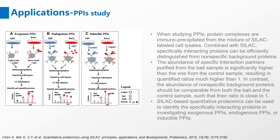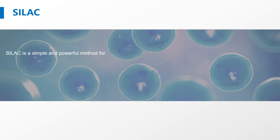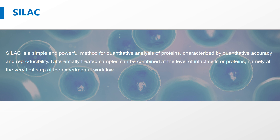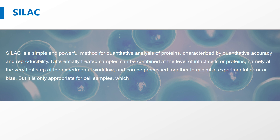SILAC-based quantitative proteomics can be used to identify the specifically interacting proteins in investigating exogenous protein-protein interactions, endogenous protein-protein interactions, or inducible protein-protein interactions. SILAC is a simple and powerful method for quantitative analysis of proteins, characterized by quantitative accuracy and reproducibility. Differentially treated samples can be combined at the level of intact cells or proteins, namely at the very first step of the experimental workflow, and can be processed together to minimize experimental error or bias. However, it is only appropriate for cell samples, which requires a long time due to cell culture.